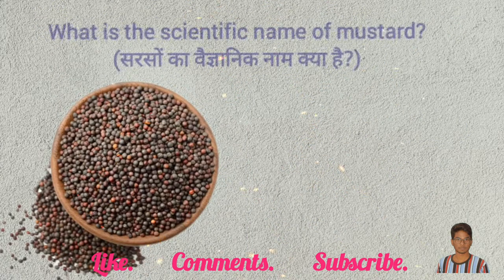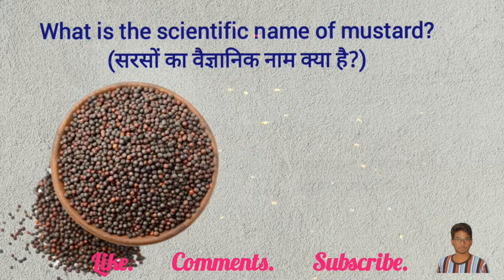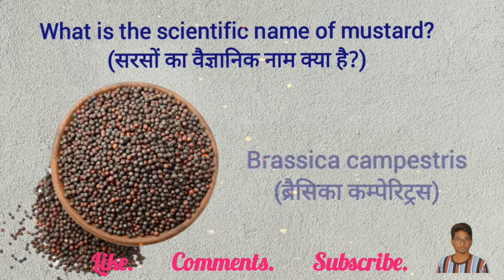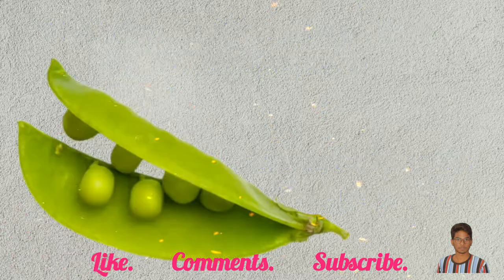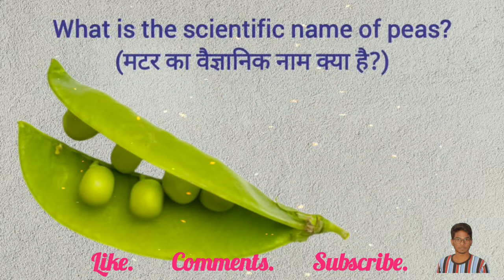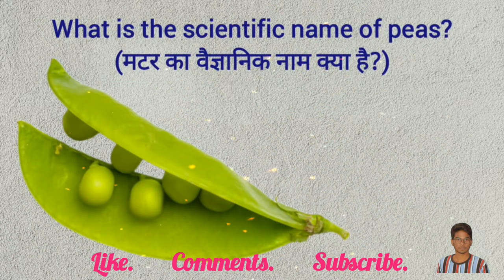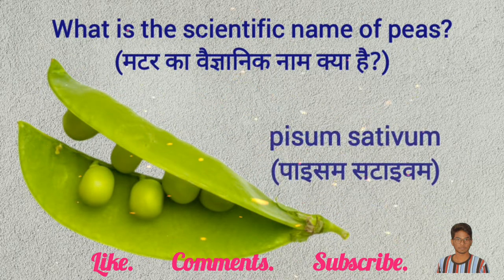What is the scientific name of mustard? Brassica campestris. What is the scientific name of peas? Pisum sativum.